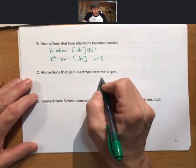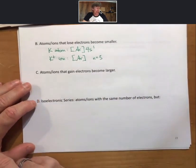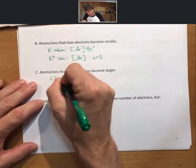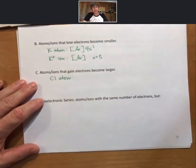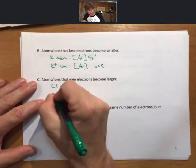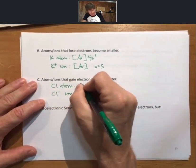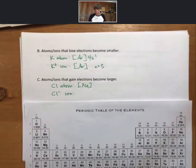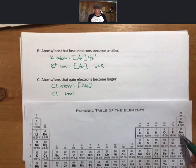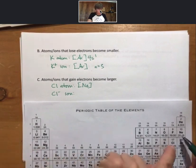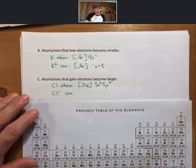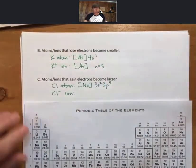Now, let's talk about C, atoms, ions that gain electrons become larger. It's a little bit harder to see, but let's talk about it. And the example I want to give is a chlorine atom versus a chloride ion. Looking at chlorine's position on the periodic table, we go backwards to find the noble gas core for neon, then 3s2, 3p5.